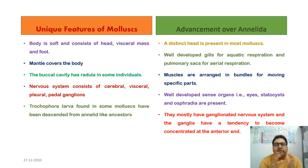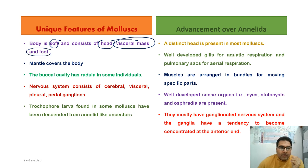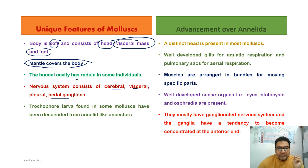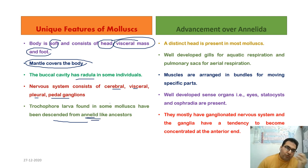The unique features of Mollusca include a soft body consisting of head, visceral mass, and foot. The mantle covers the body and secretes the shell, which is made of conchiolin that helps harden it. The buccal cavity has a radula in some individuals. The nervous system consists of cerebral, visceral, pleural, and pedal ganglia. The trochophore larvae found in some mollusks is evidence that mollusks descended from annelid-like ancestors.